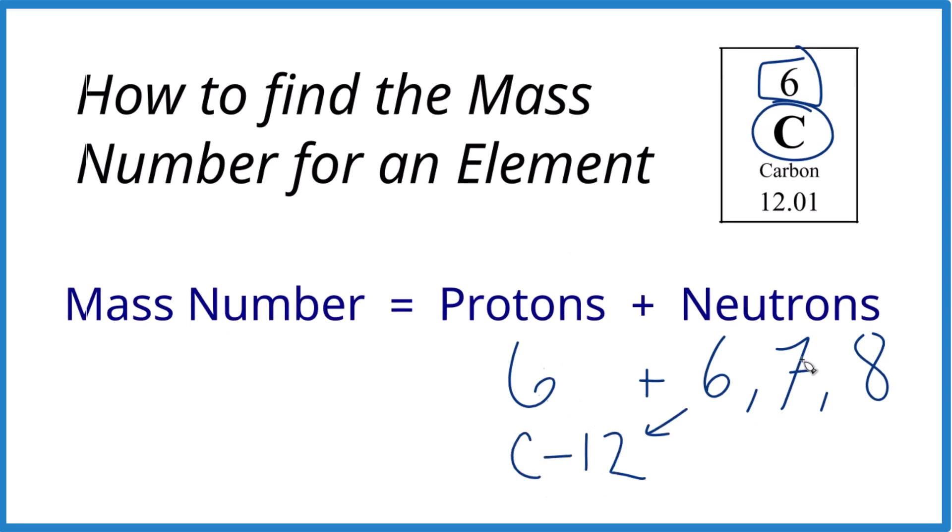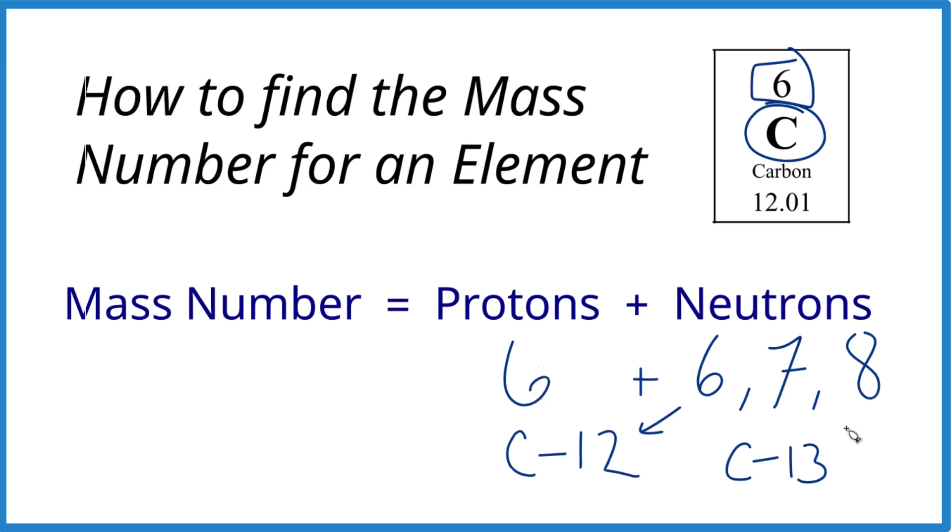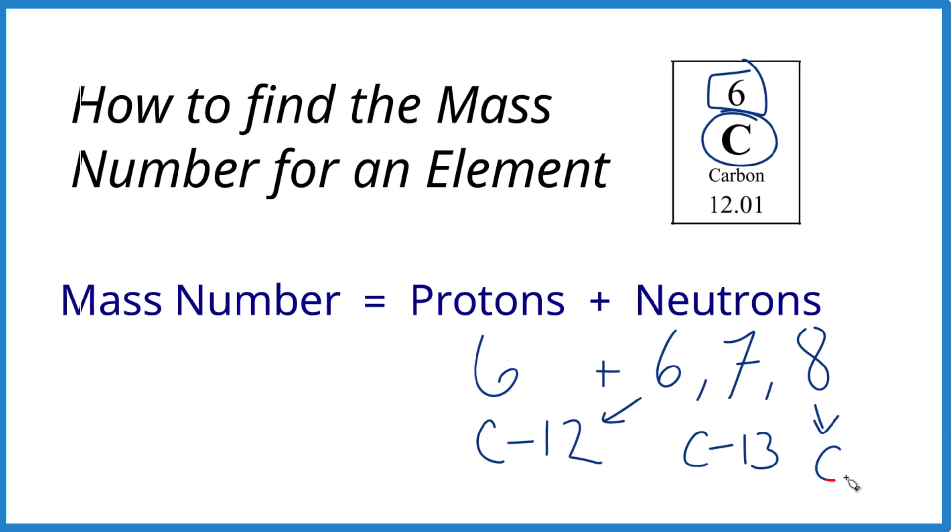If you have carbon here with 7 neutrons, that's called carbon-13. And then if you have carbon with 8 neutrons, that's the isotope carbon-14. And you might have heard of carbon-14 dating.